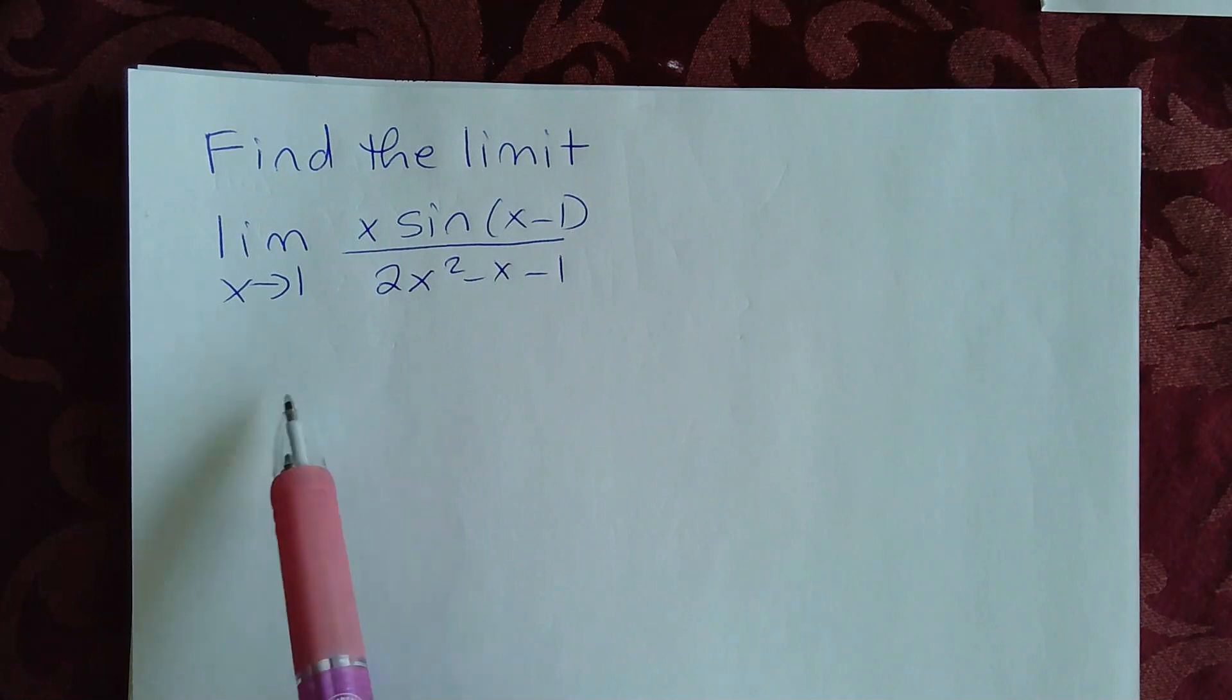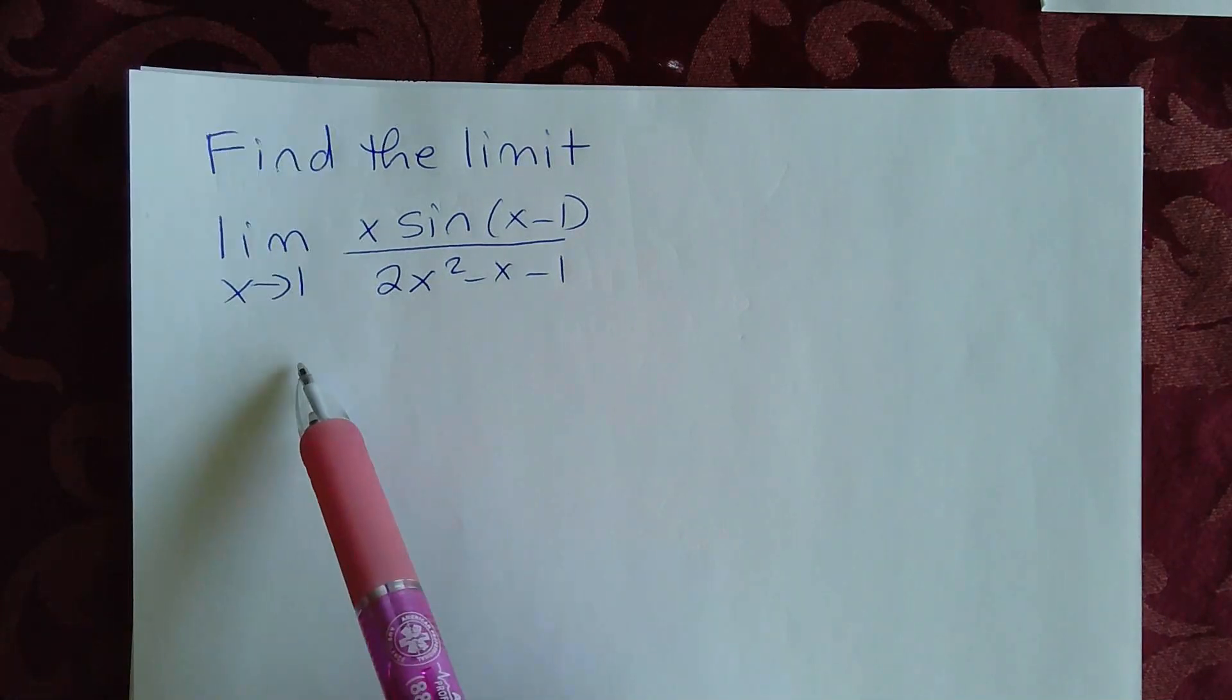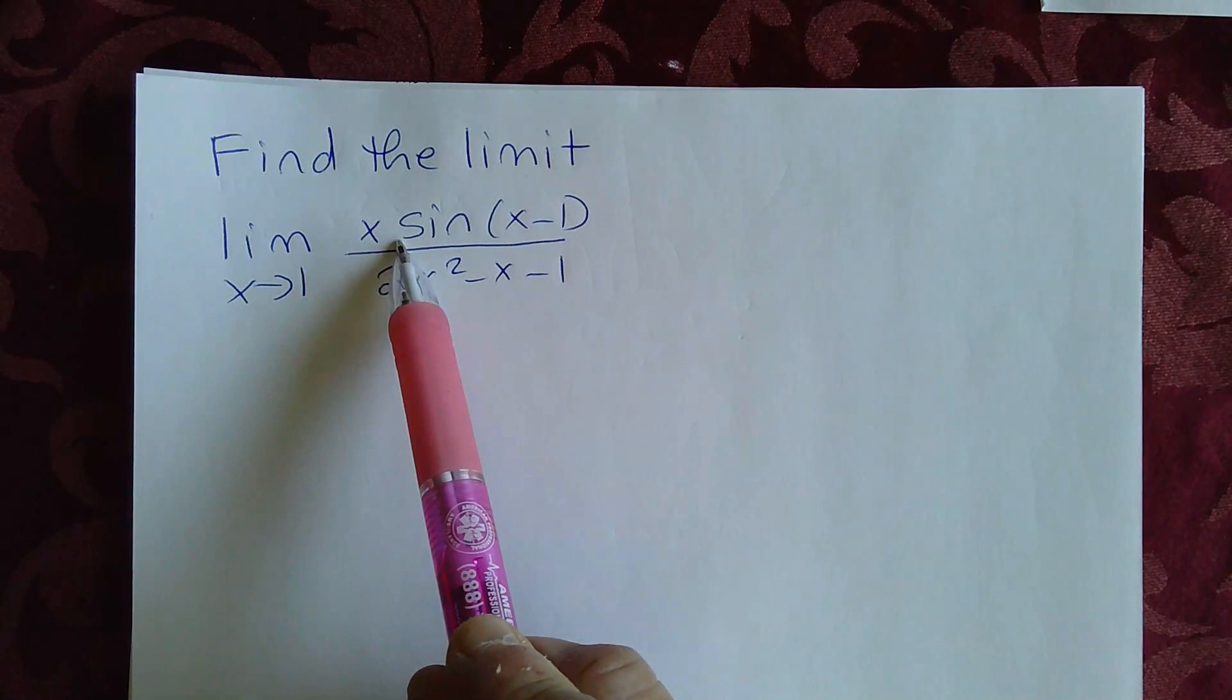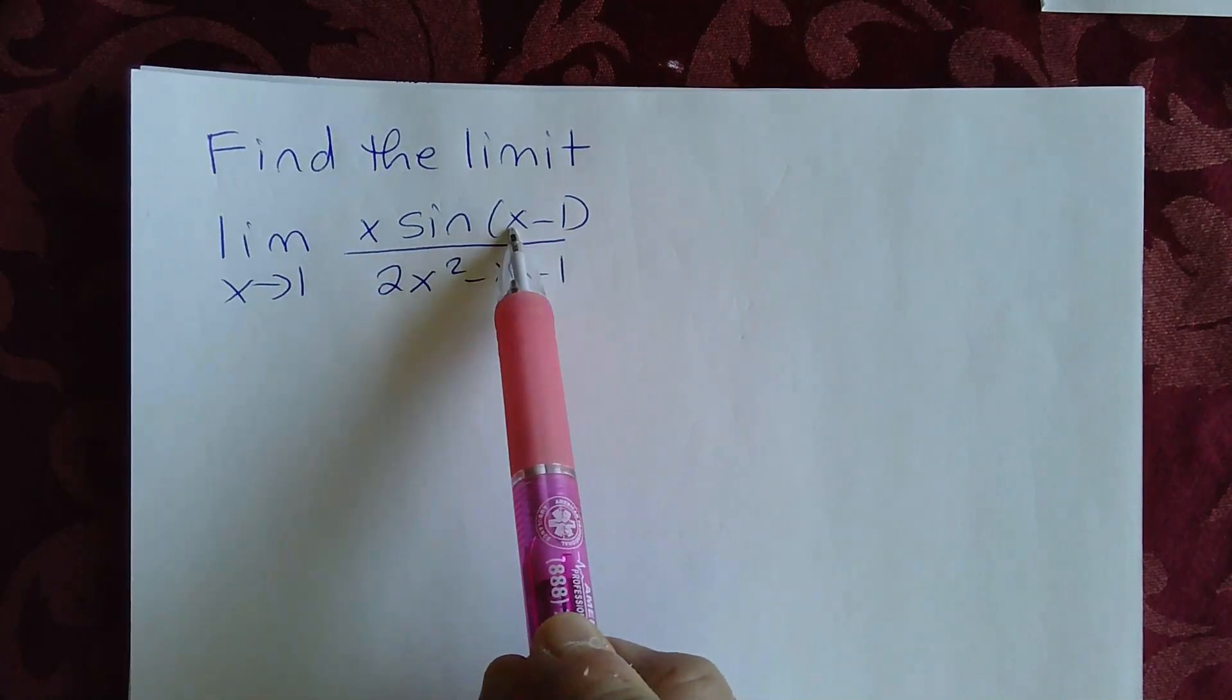Now if you use direct substitution, if you plug in 1 for x, you're going to get 1 times sine(1 minus 1). 1 minus 1 is 0, so sine 0, which is 0, so you're going to have 0 in the numerator.